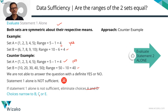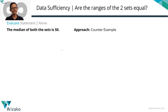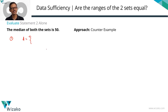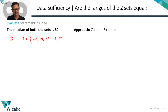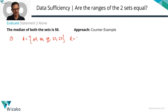Now evaluate Statement 2 alone. The median of both sets is 50. Using a counterexample approach: start with set A as 47, 48, 50, 52, 53. The median is the third element = 50. The range equals 53 minus 47, which is 6.